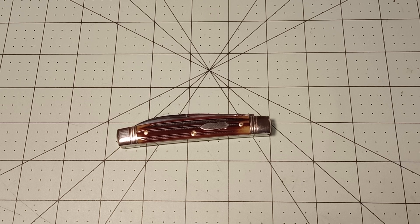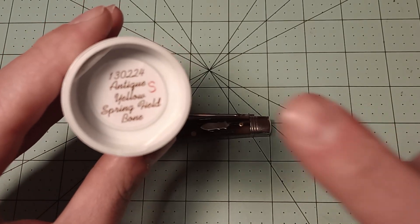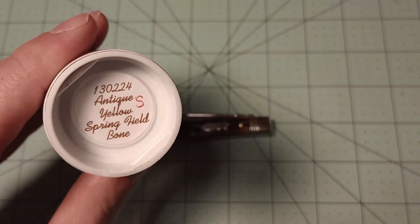This one's a clerk, meaning it has two blades. And this one's the antique yellow Springfield bone. And this is an S knife. I got this from Collector Knives.